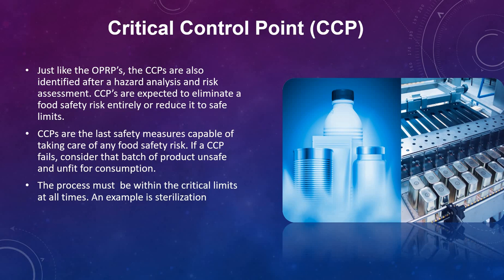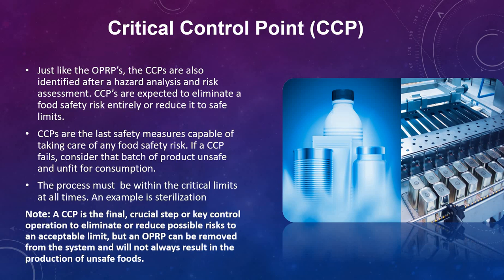Now let's see the difference between OPRP and CCP. What is the major difference? A CCP is the final crucial step or key control operation to eliminate or reduce possible risks to an acceptable limit. But an OPRP can be removed from the system and will not always result in the production of unsafe foods. What does this mean? If a CCP fails, then we can consider that food is unsafe for consumption. But if an OPRP fails, we cannot say or consider that the food is unsafe for us.